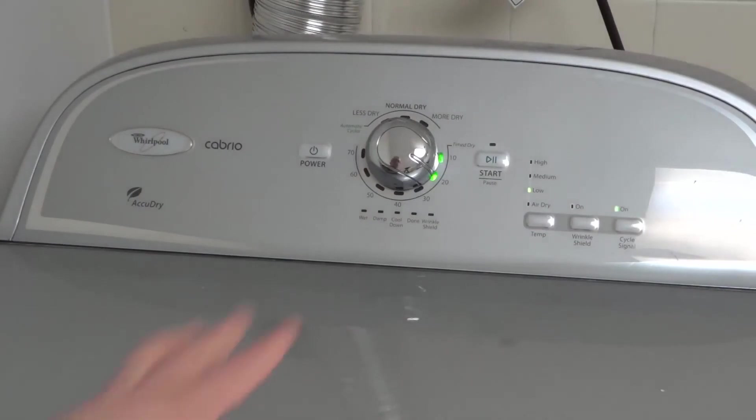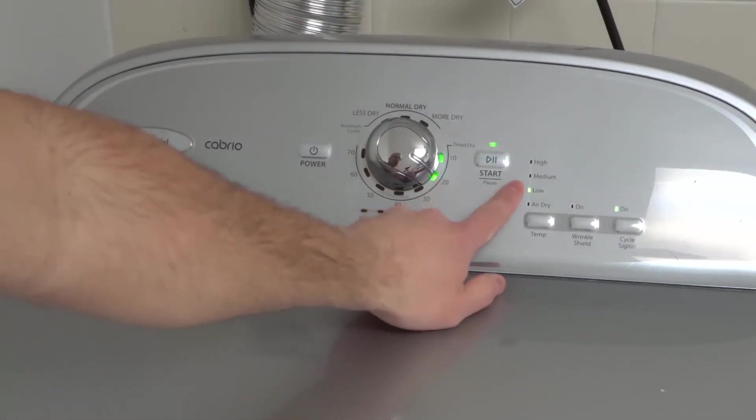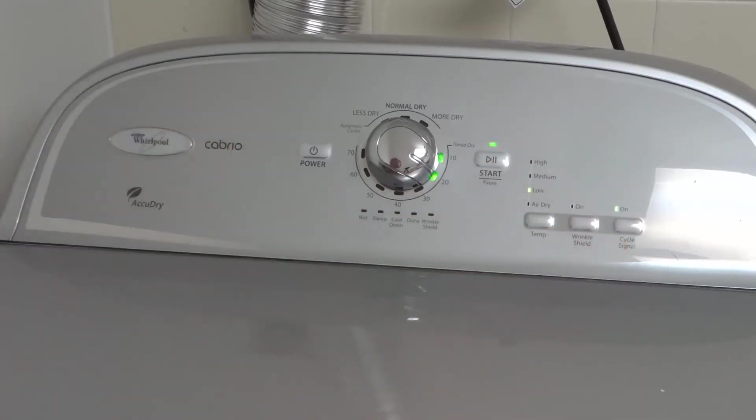Once you have chosen all of your options, you're going to go ahead and start it. So you can see I have a 20-minute time dry on low temperature. Wrinkle shield is not on, but the cycle signal is on. Once you've chosen your options, you want to hit the start button. And the machine will start tumbling and drying your clothes.